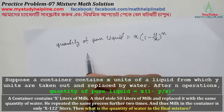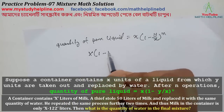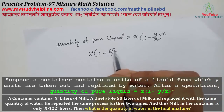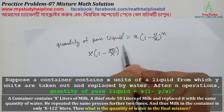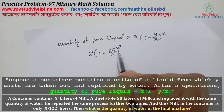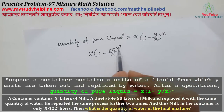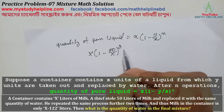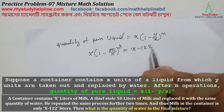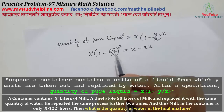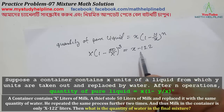We will check the total calculation. The initial mixture is x. Using the formula: x * (1 - y/x)^n, where y is the amount removed each time. After removing 50 liters three times from initial x liters, the equation becomes x * (1 - 50/x)³ = x - 122.